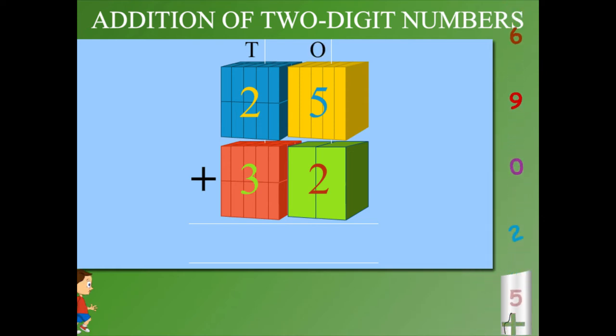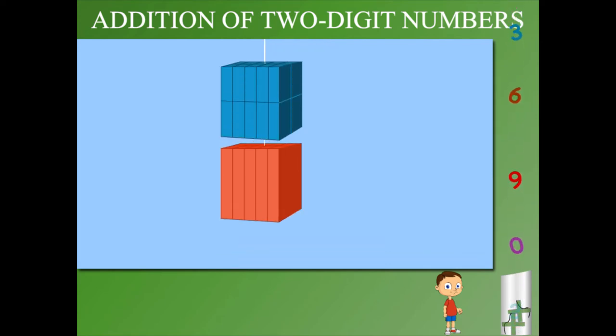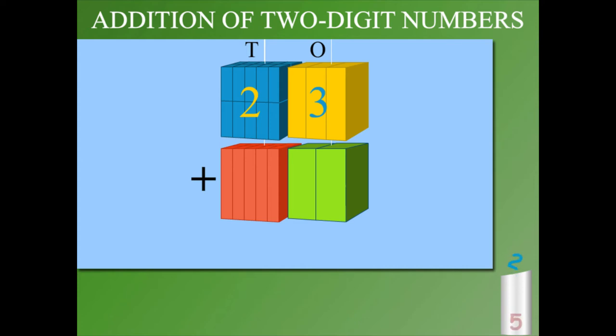Add the ones, 5 plus 2 is 7. Now add the tens, 2 plus 3 is five tens. You see it's 57. This time it is 23 plus 12.